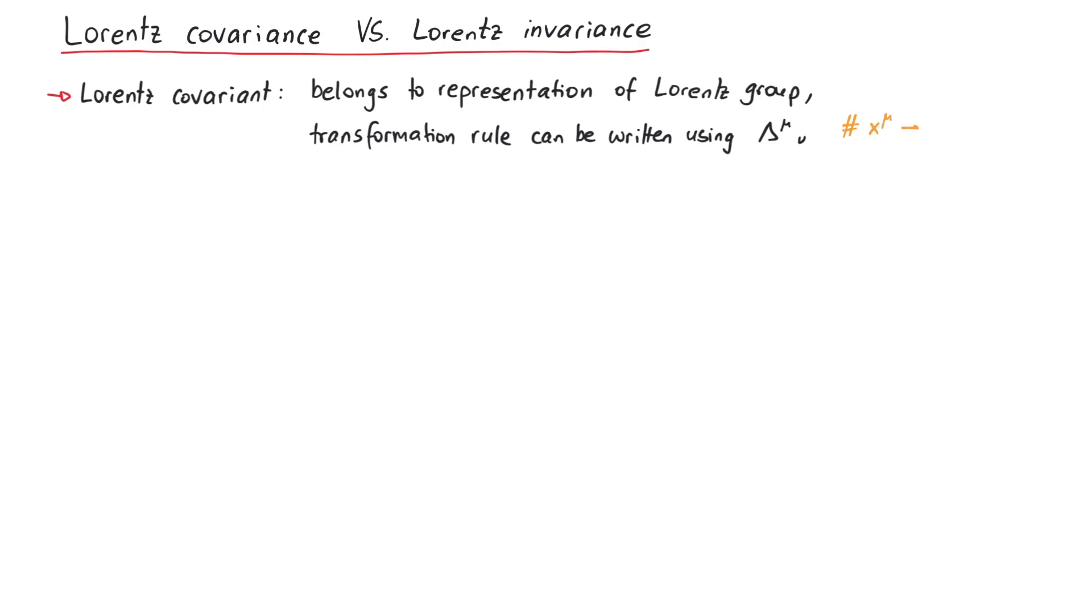Take for instance a 4 vector. We know how a 4 vector transforms under a Lorentz transformation by using the transformation matrix, therefore it is a Lorentz covariant quantity.